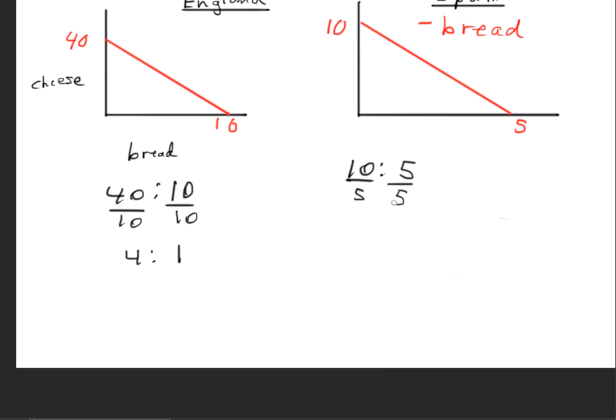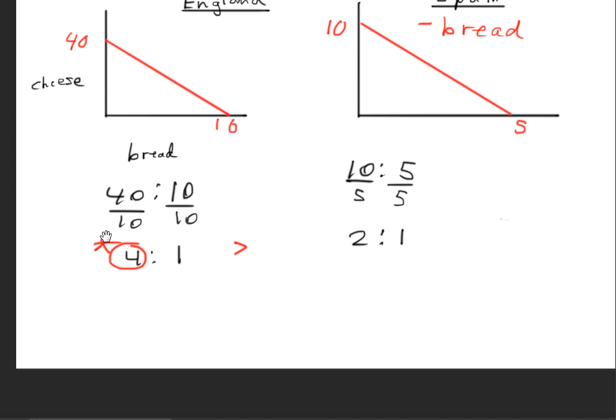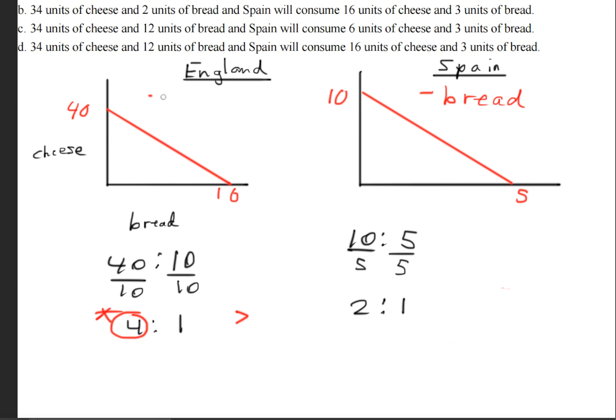So this gives us 2, this gives us 1. Do not pay attention to the 1s. We're only interested in these numbers here. We see that 4 is greater than 2. This value belongs to England, so England has the comparative advantage for cheese.